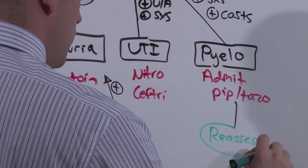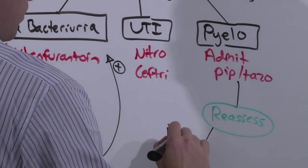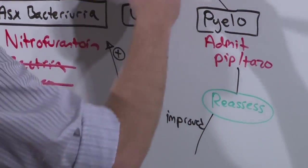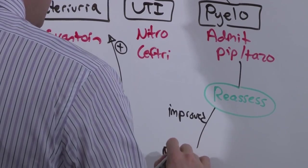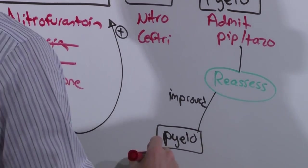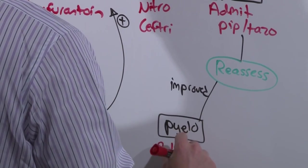And after two days, if she has improved, and of course by now cultures and sensitivities will have come back, all she had was pyelo and she needs to be treated with antibiotics based on cultures and sensitivities for seven to fourteen days.